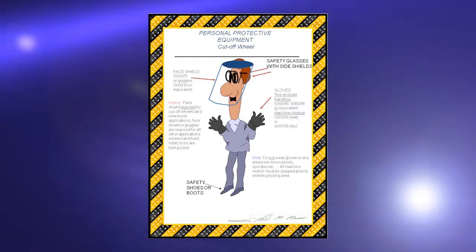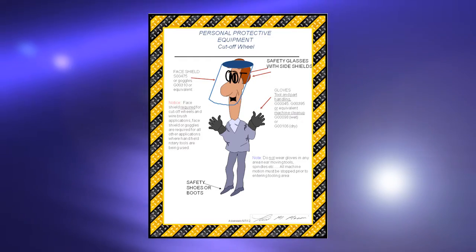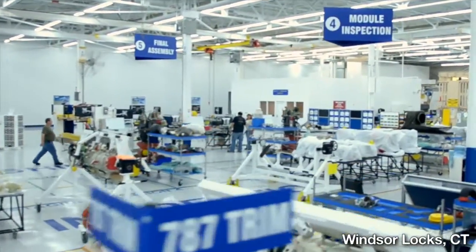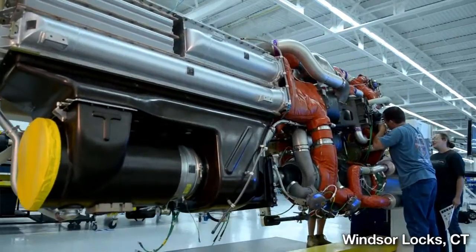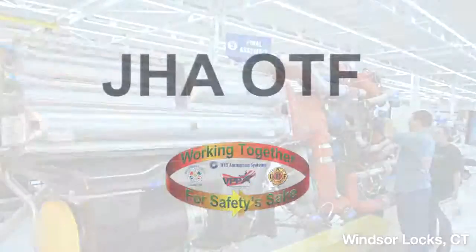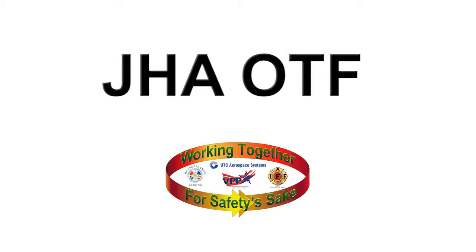Before performing non-standard work, we all should make the personal choice to apply Job Hazard Analysis on the Fly, or JHAOTF. Job Hazard Analysis — JHA — on the fly, our SLAM process, is what we're using here to help eliminate injuries caused from non-routine activities, non-standard work, and times where tools have changed.